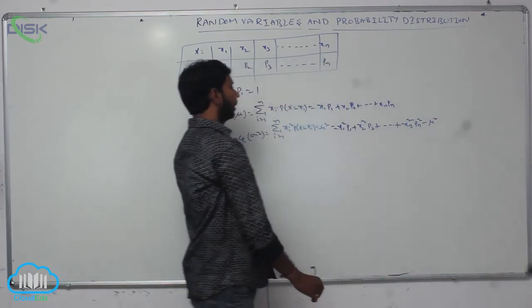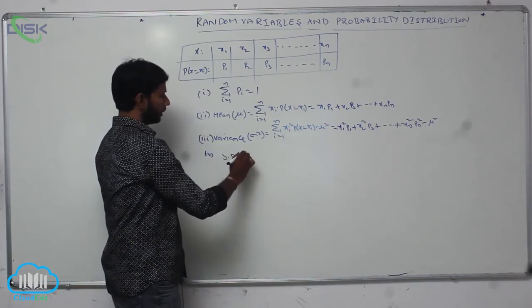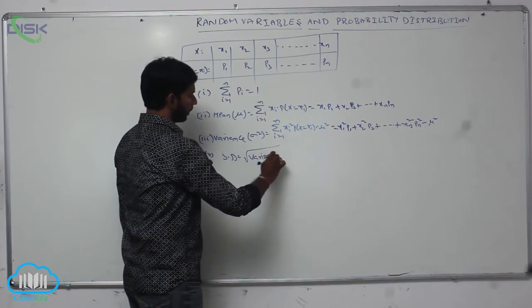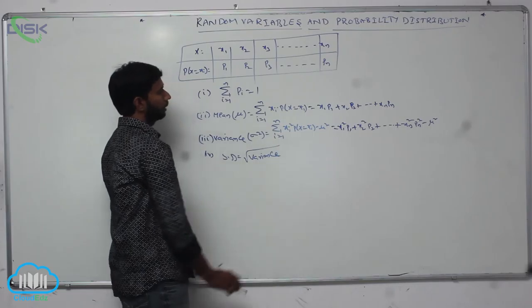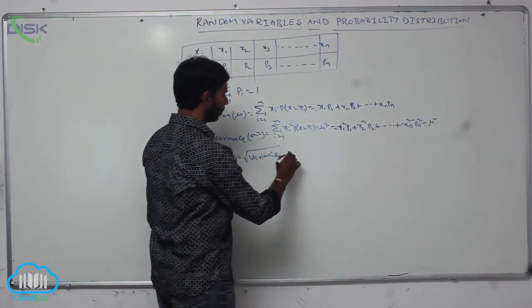Here, mu means mean. Next one is standard deviation. Standard deviation S is equal to square root of variance. Here, the variance is represented by sigma squared, that is equal to sigma.